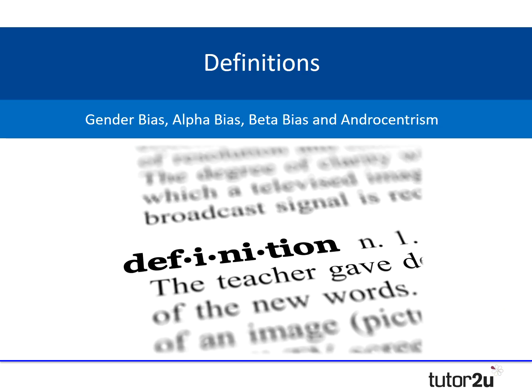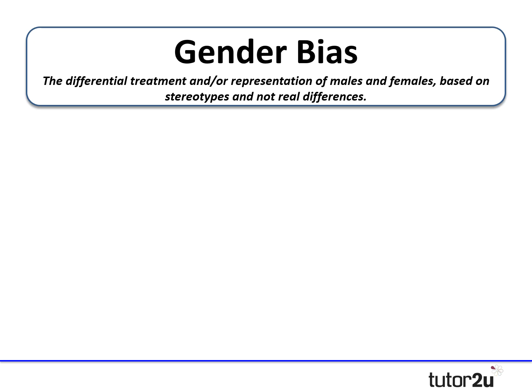Let's start by looking at the different definitions in the gender bias topic. First and most importantly, you need to know what the term gender bias itself means. The differential treatment and/or representation of males and females based on stereotypes and not real differences is what we would term gender bias. The term representation could be how someone is portrayed in academic research — if a male or female sex is portrayed in a negative light, then the research would be accused of being gender biased.